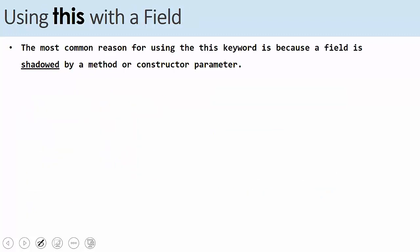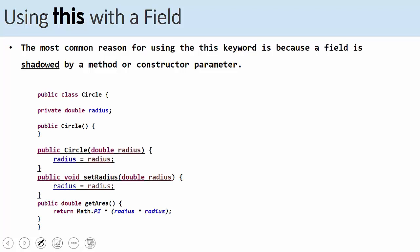However, sometimes you need to use the this keyword. Most probably, for beginners at least, it's because of shadowing. So what is shadowing?